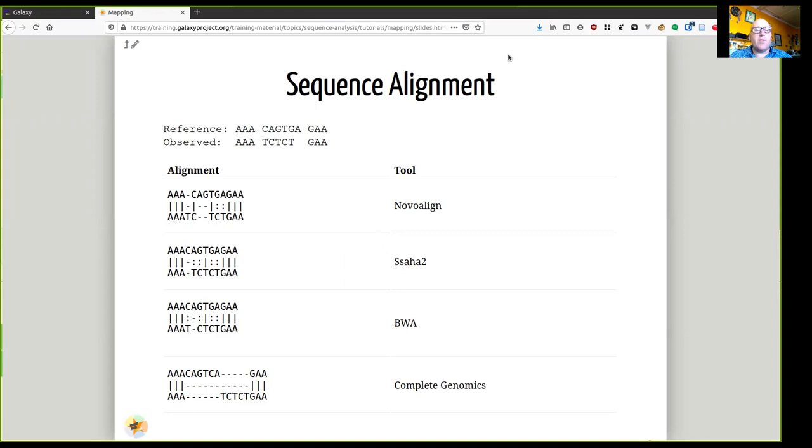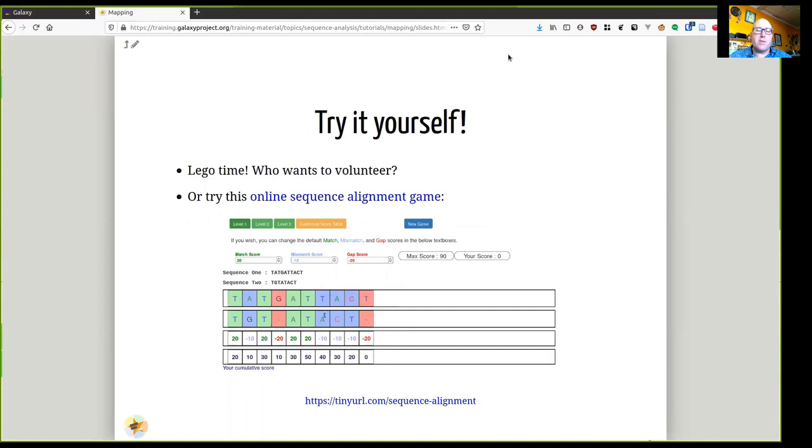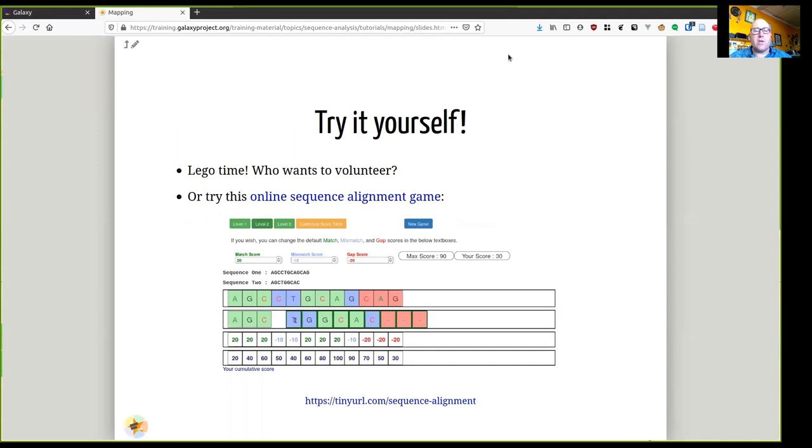When we look at these alignments, then they imply different variants which are found between the two sequences. If you want to experiment with calculating alignments, here's a link and you can click on it in the online version of the materials for a kind of game where you can experiment with doing sequence alignment yourself in a browser.